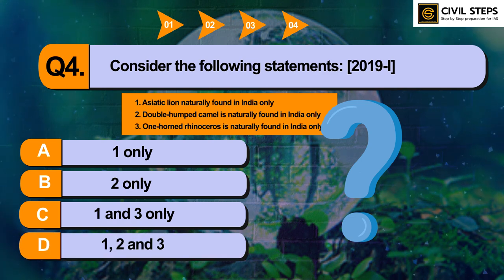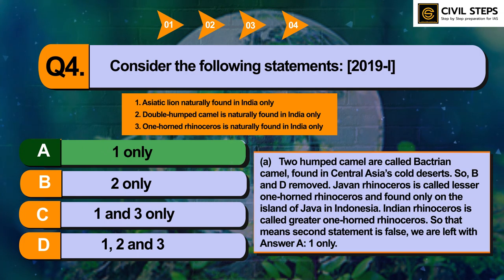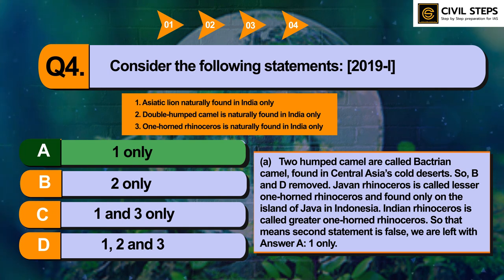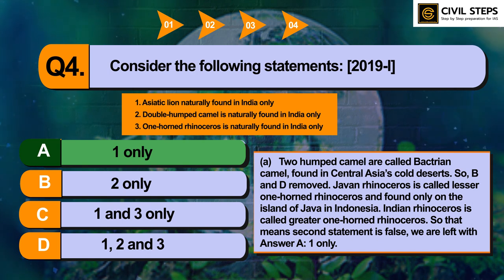The answer of this question is option A — one only. Two-humped camels are called Bactrian camels, found in Central Asia's cold deserts, so statement 2 is false. Javan rhinoceros is called the lesser one-horned rhinoceros and is found only on the island of Java in Indonesia, while the Indian rhinoceros is called the greater one-horned rhinoceros. You should know endemic species found in India only, or in particular parts of India like the Western Ghats or Andaman and Nicobar Islands.